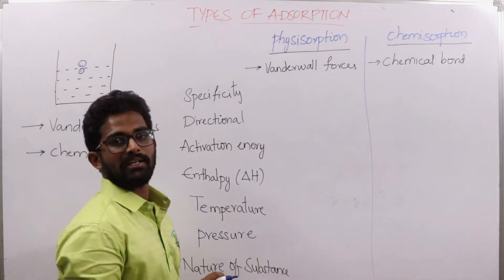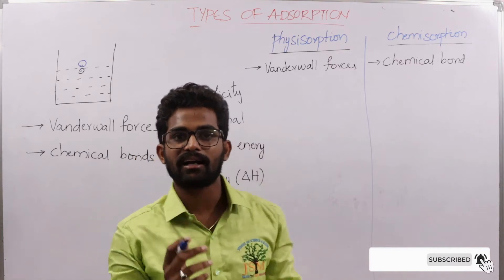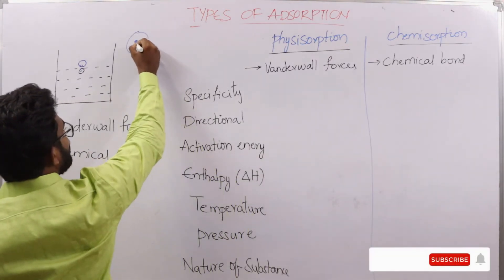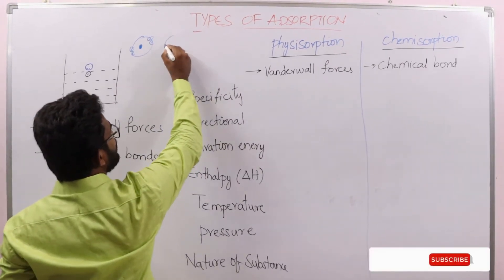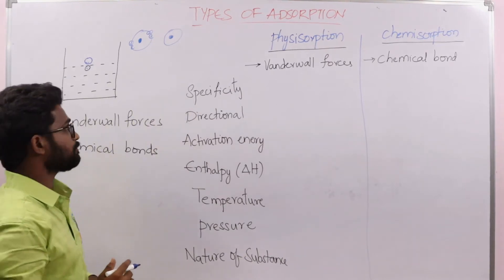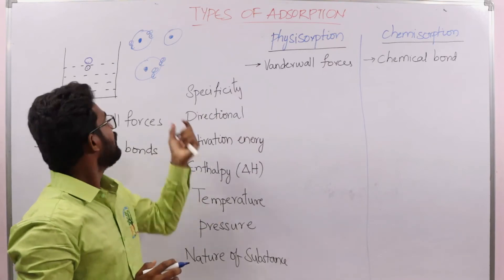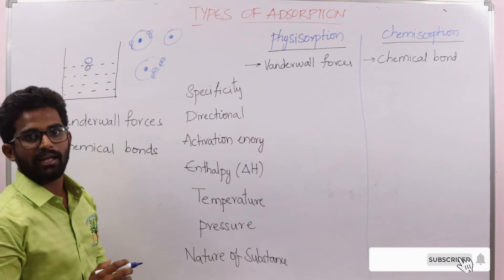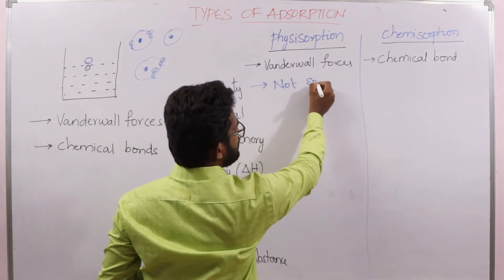Firstly, specificity. In physisorption, the forces are van der Waals forces, which occur due to asymmetry in electron distribution. When another molecule comes close, the electron distribution is disturbed such that the electron cloud concentrates toward one side, creating polarity. This bond formation can occur anywhere on the surface, so physisorption is non-specific in nature.